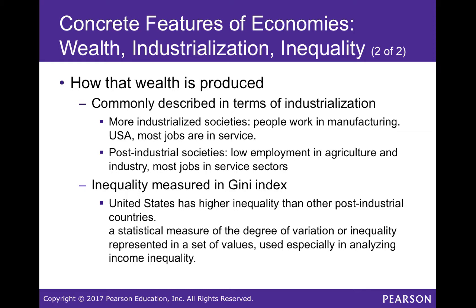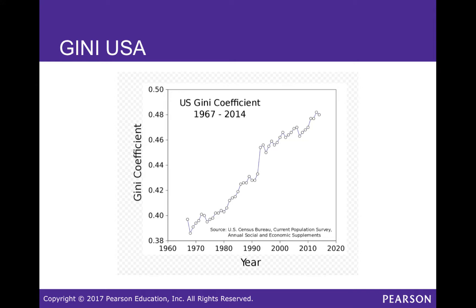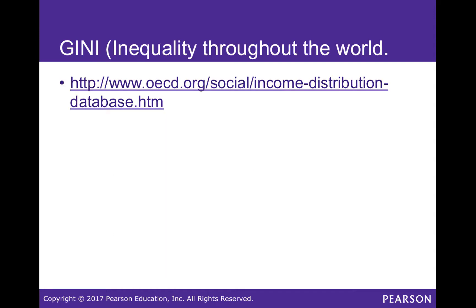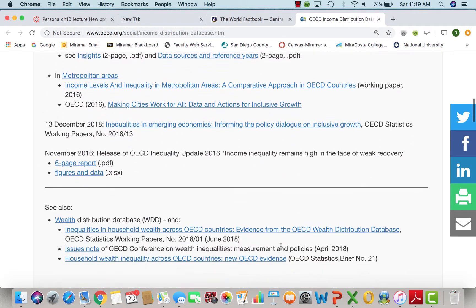Industrialization connects to inequality — the gap between rich and poor. In the United States, inequality is comparable to countries like China, Iran, and Mexico, as measured by the Gini index, also called the Gini coefficient. The higher the Gini coefficient, the more inequality exists in a country. There are websites that show the Gini coefficient for countries throughout the world.